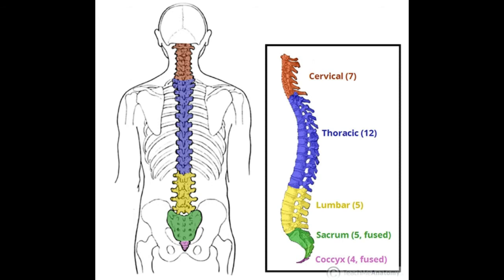Going further down into our lumbar region — where you've got a dip in your back — those are our lumbar vertebrae, and there are five of them. Going further down we have the sacrum, another area of the vertebral column with five vertebrae. And then finally the coccyx, which is a bit like your tailbone. So we've got the cervical, thoracic, lumbar, sacrum, and coccyx.